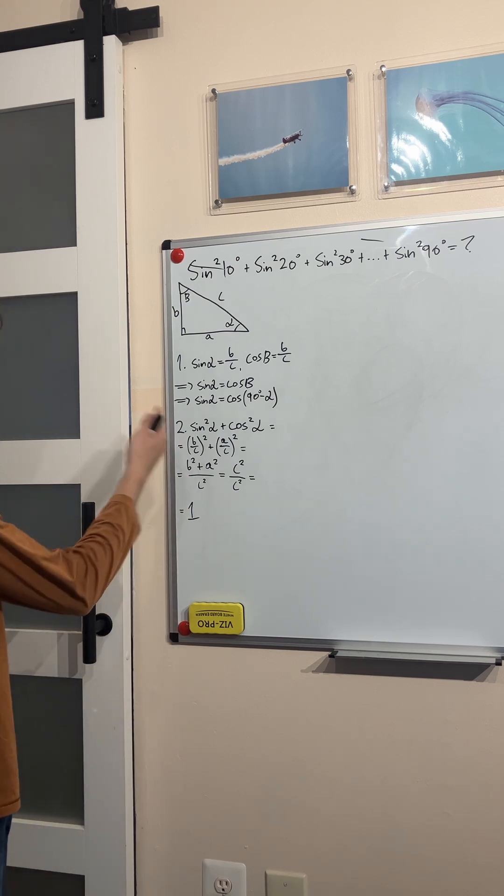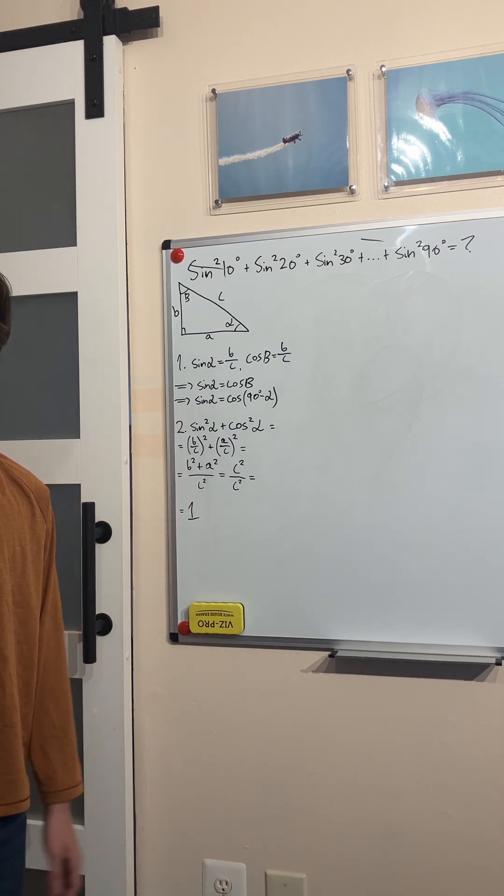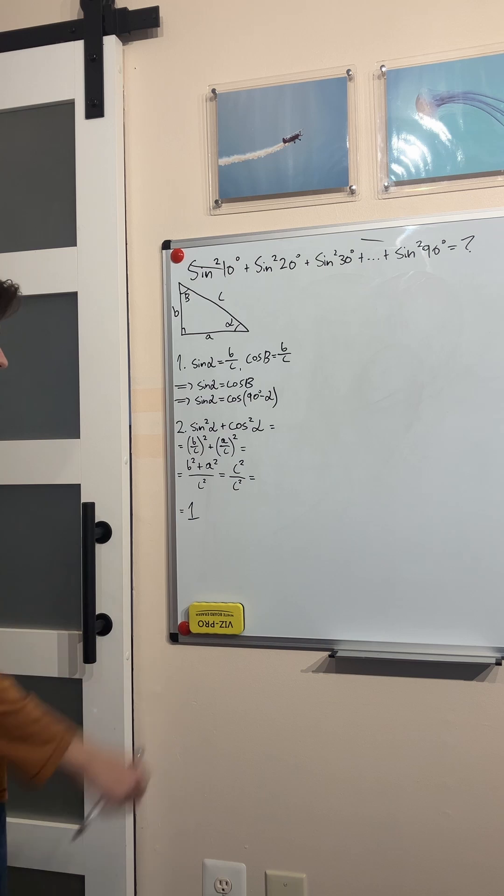The second one is the very famous Pythagorean identity. If you haven't heard this before, I'm going to quickly show you and you'll understand why it's called the Pythagorean identity.